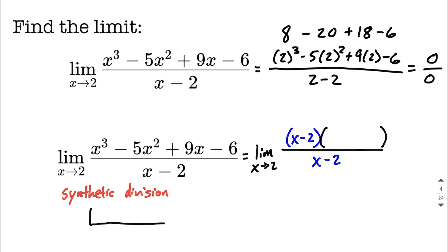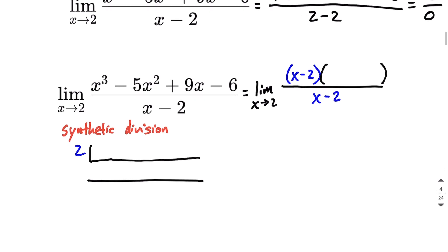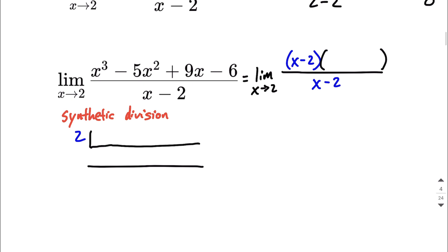Basically what we're going to do is we're going to go ahead and we're going to put positive 2 out in front. Because 2 made the numerator equal 0, and 2 made the denominator equal 0.